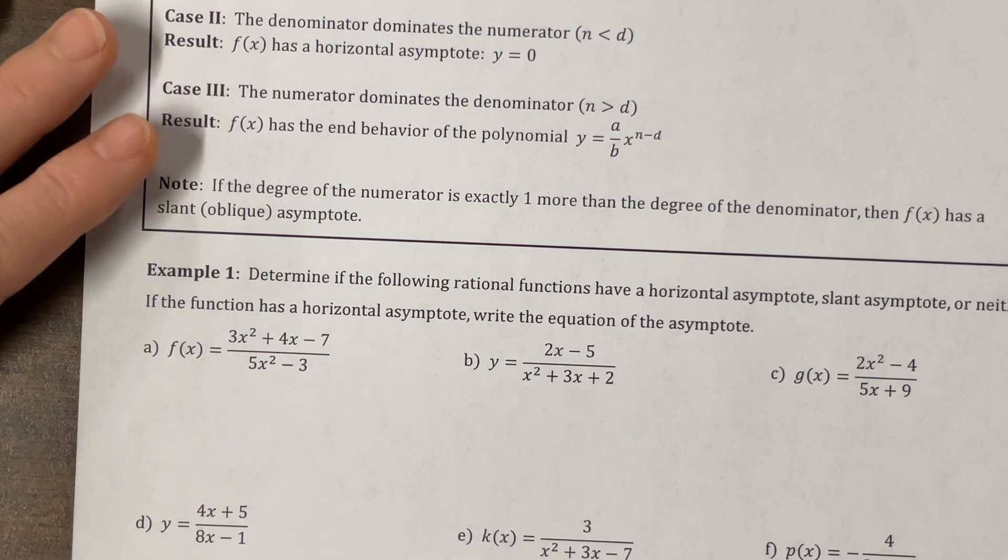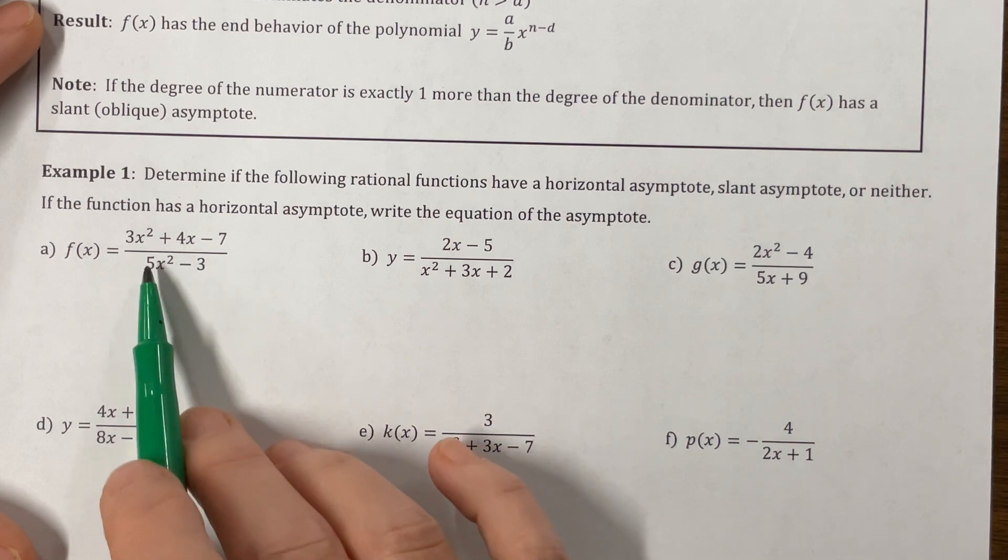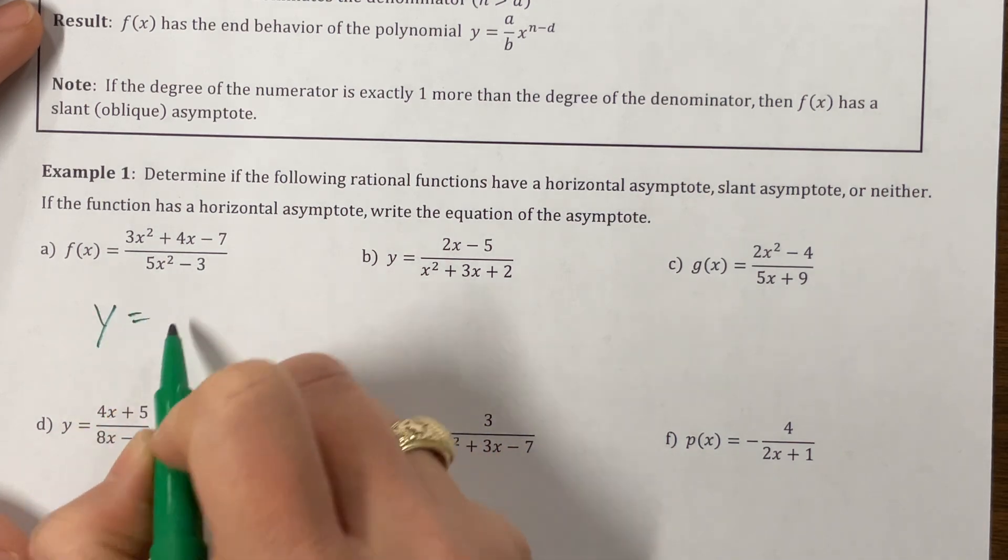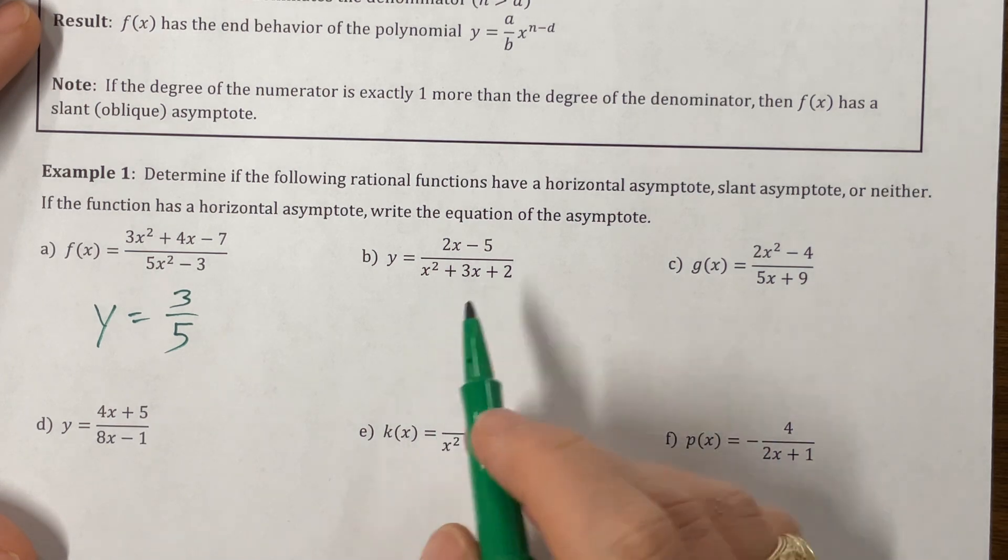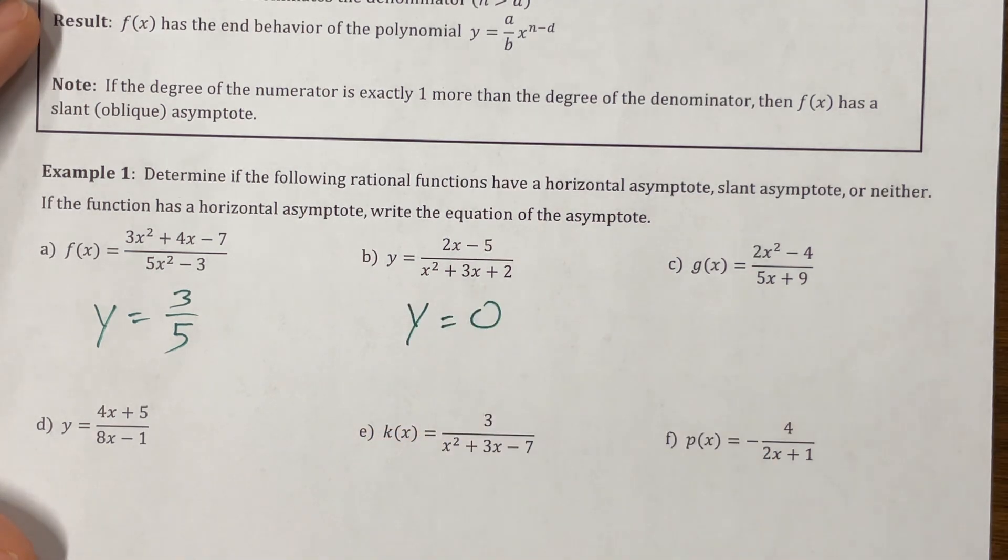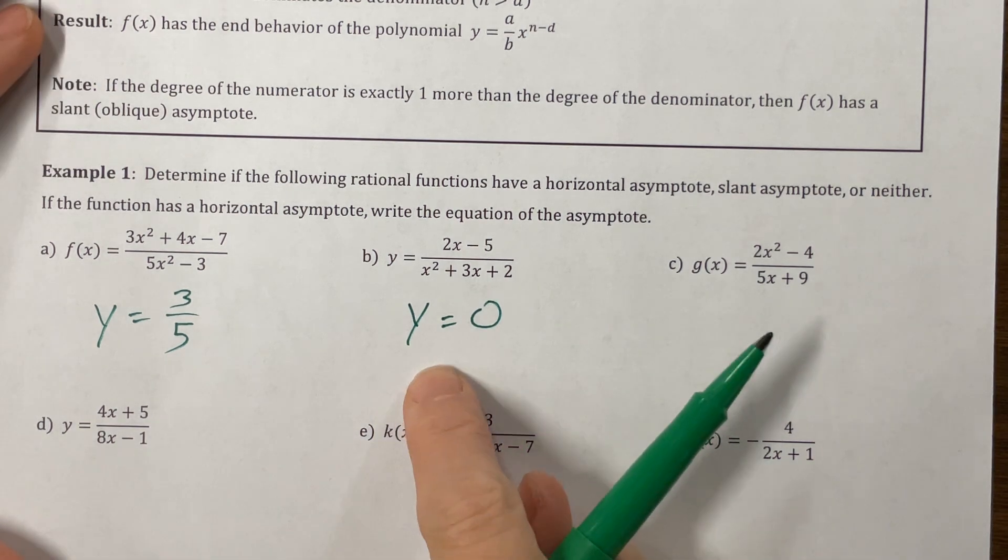Okay. Determine if the following rational functions have a horizontal asymptote, a slant asymptote, or neither. Okay. This is same degree. So it's divide the leading coefficients and it's horizontal asymptote. This one is bottom heavy. The degree of the denominator is larger than the degree of the numerator. Its asymptote is y equals zero.